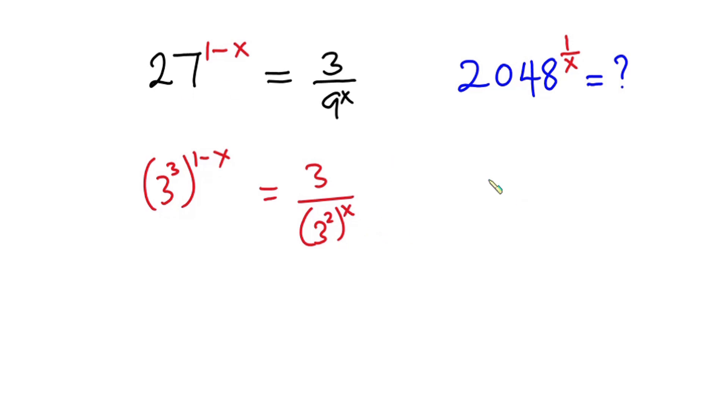Now from indices, if I have a to the power m or to the power n, this is the same as a to the power mn. So I can multiply this one by this straight away, likewise this one I can multiply this by this straight away.